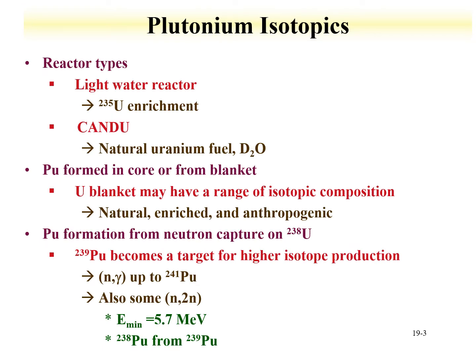Plutonium isotopics provide excellent signatures for nuclear forensics applications. Plutonium can be produced in reactors through neutron capture on uranium-238 and subsequent decays: uranium-239 → neptunium-239 → plutonium-239. Two important reactor types are light water reactors and CANDU reactors. Light water reactors use regular water as the coolant and enriched uranium-235 as fuel, which provides a signature that transmits to the plutonium isotopics. The CANDU reactor — Canadian Deuterium-Uranium Reactor — uses natural uranium with a deuterated water (D2O) coolant. The plutonium isotopics are impacted by the fuel type, providing a signature for the origin of the plutonium.